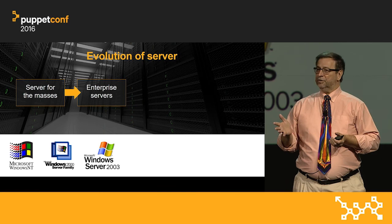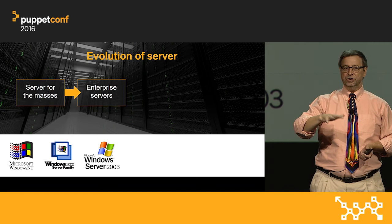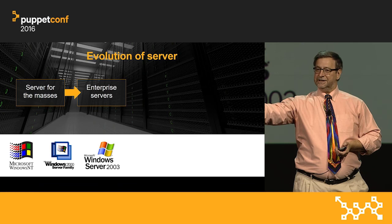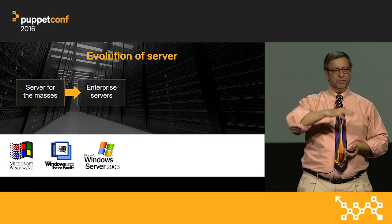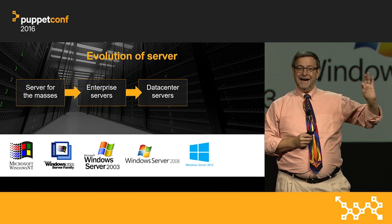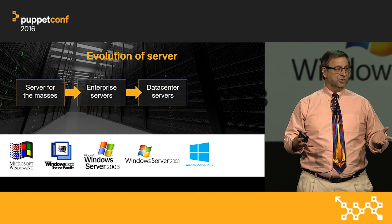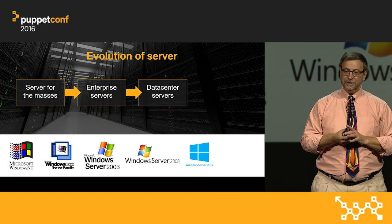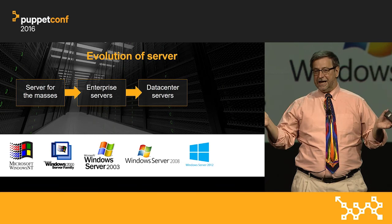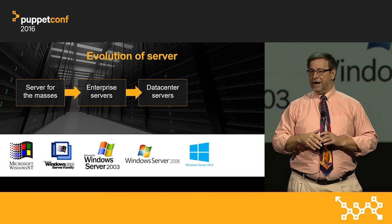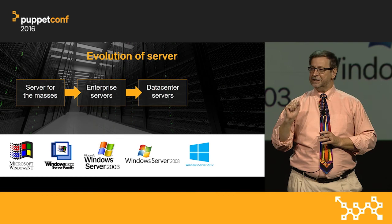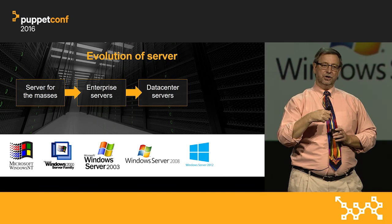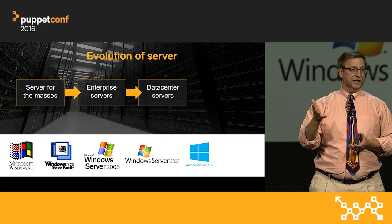With Enterprise Server, we added Active Directory and group policy, and we could tie all the servers and clients together into a coherent experience. The way you managed that was with remote desktop — essentially a local experience projected to a remote client. With Windows Server 2003, we brought about .NET, which brought about the line of business application explosion, and we needed to produce the data center era.